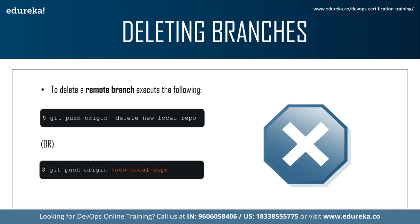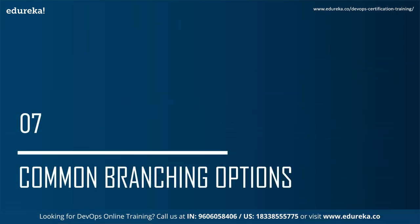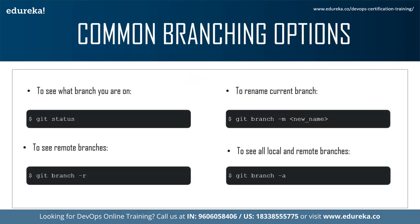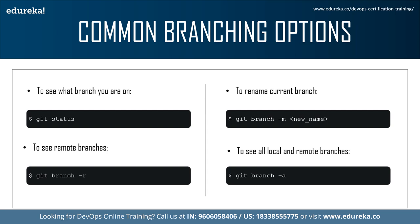Now let's look at some common branching operations in git. The first is git status. The git status command displays the state of the working directory and the staging area. It lets you see which changes have been staged, which haven't, and which files aren't being tracked by git. The status output does not show information about committed project history — it shows the status of the branch you're currently working on and whether files are staged or committed.